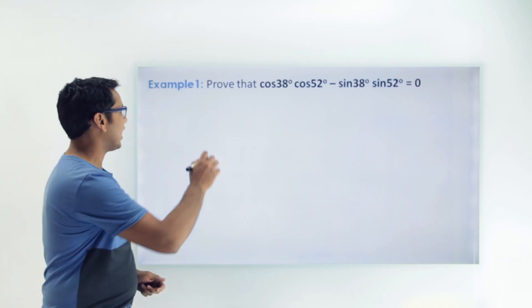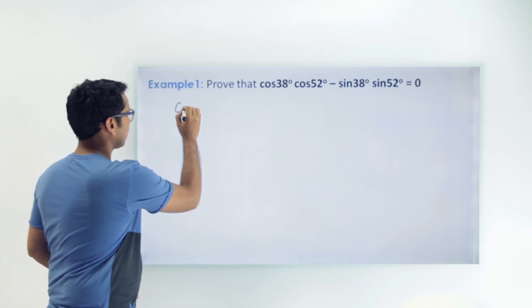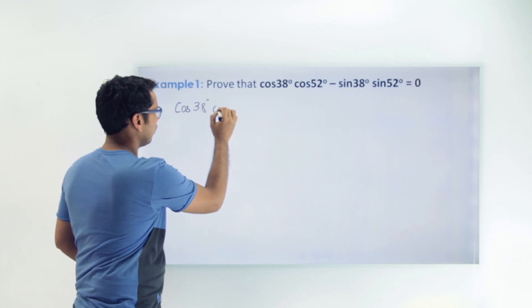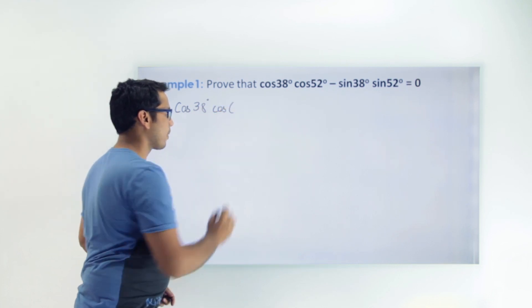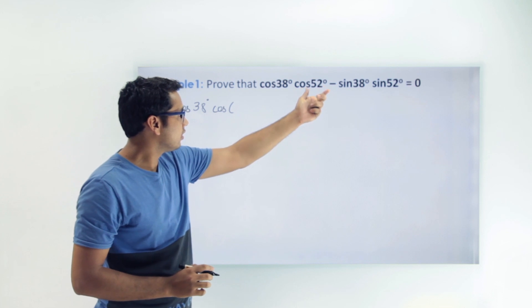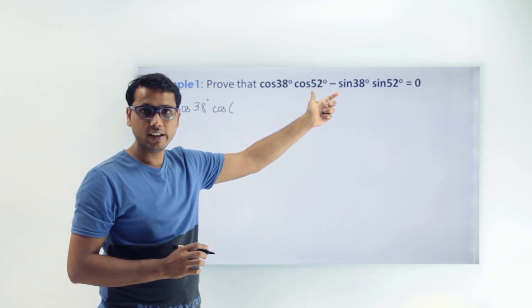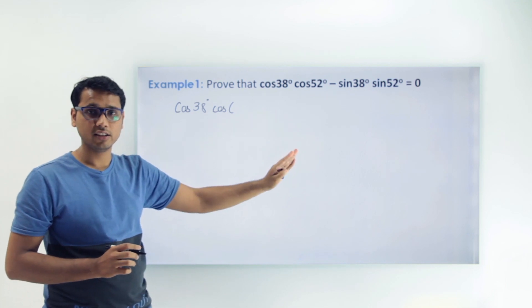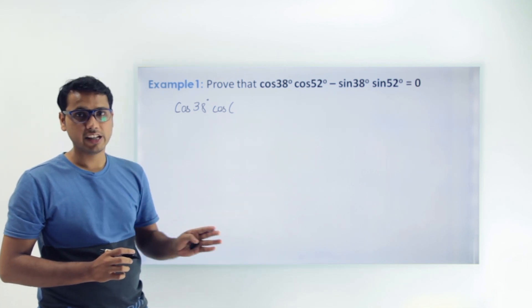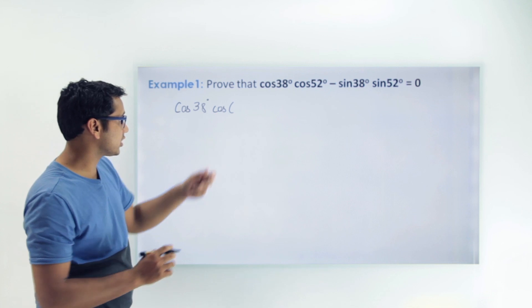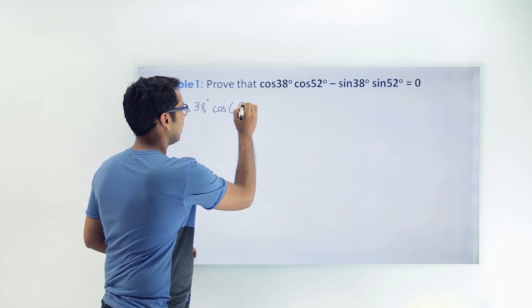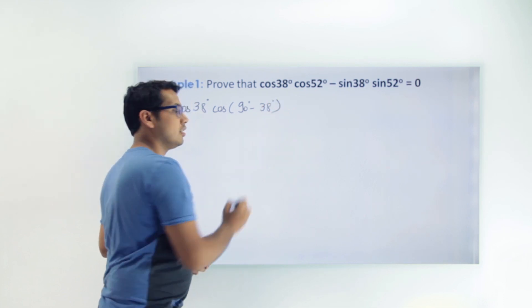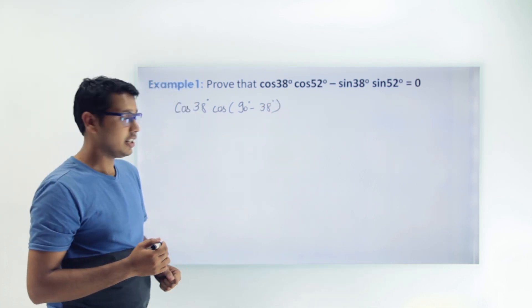So we can write cos(38) × cos of the complementary angle of 52 degrees. What is the complementary angle of 52 degrees? Just subtract 52 from 90 degrees — we get 38 degrees.